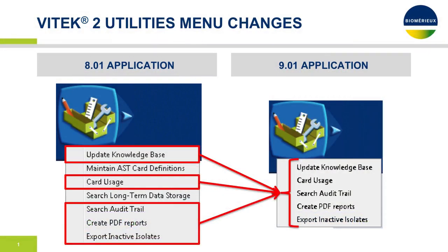The utilities menu has altered slightly from Vitec2 Systems Version 8.01 to Version 9.01. For example, the audit trail, card usage report, and create PDF reports remain, but both long-term data storage and maintain AST card definitions have been relocated to the web application.